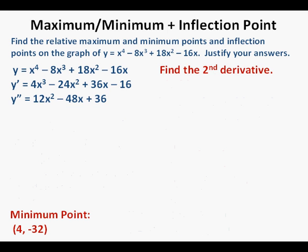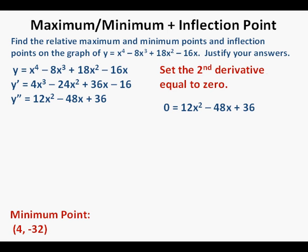Next we find the second derivative using the power rule: y double prime equals 12x squared minus 48x plus 36. Next we'll find the points of inflection by setting the second derivative equal to 0, giving 0 equals 12x squared minus 48x plus 36.